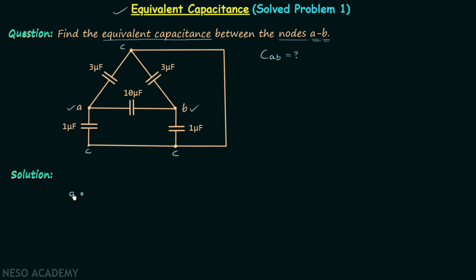This is node A, this is node B, and this one here is our node C. Between A and B we have a 10µF capacitor, so let us connect one capacitor having the value 10µF. I will not write down microfarad along with the capacitor values because upon calculation the answer will be in microfarad only, saving time and keeping the network neat and clean.